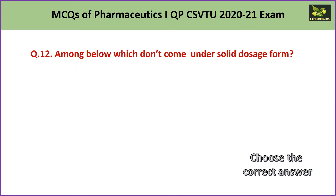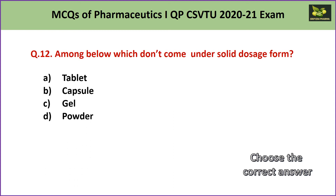Question number 12: Among the below, which does not come under solid dosage form? A. tablet, B. capsule, C. gel, or D. powder. Except for gel, all three — tablet, capsule, and powder — are solid dosage forms. Gel is a semi-solid form. Hence the answer is C — gel.